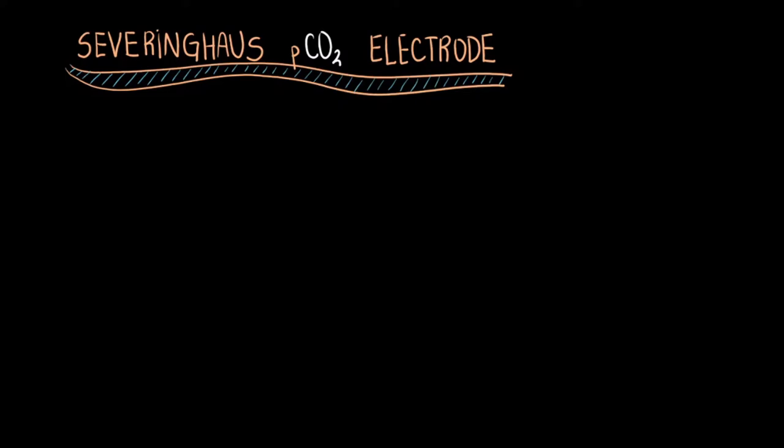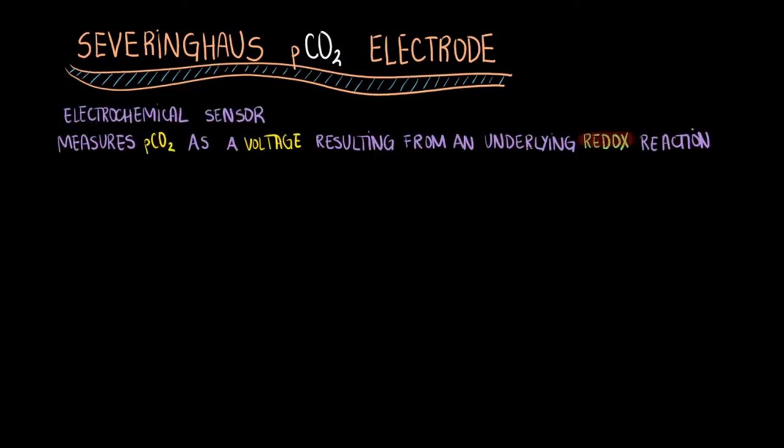The Severinghaus electrode is an electrochemical sensor that measures the partial pressure of carbon dioxide as a voltage using an embedded pH electrode. It measures the partial pressure of CO2 by taking advantage of an underlying redox reaction.